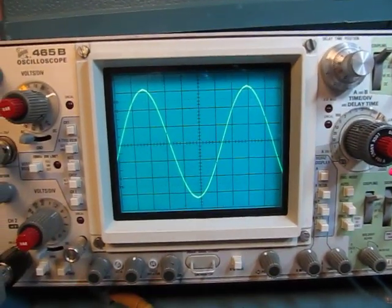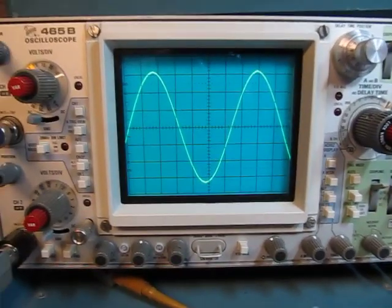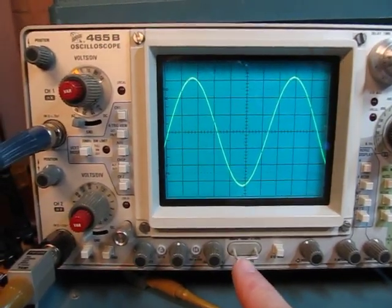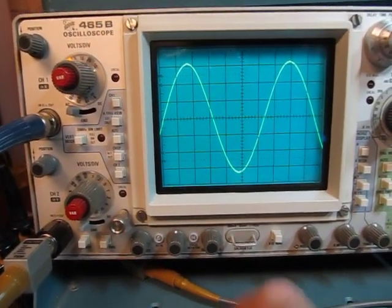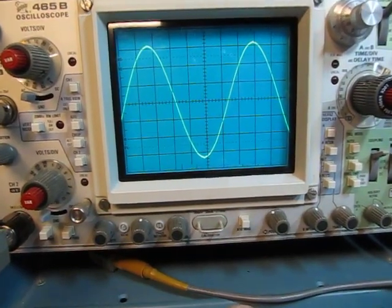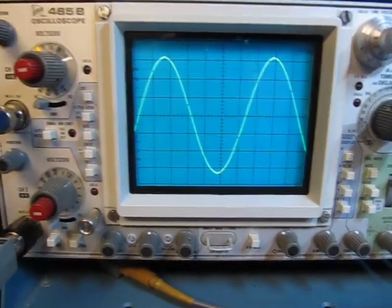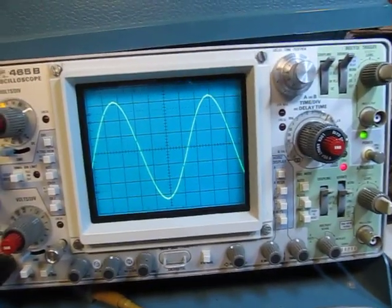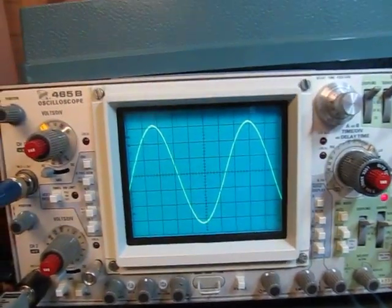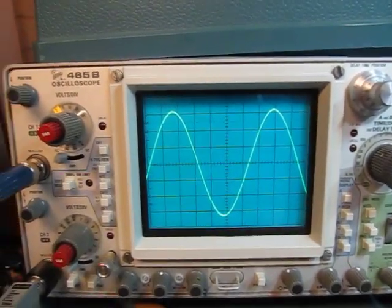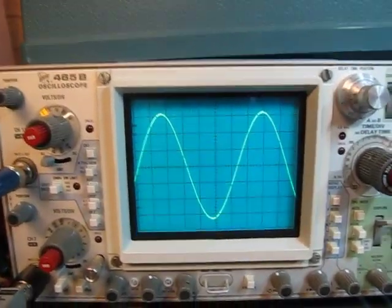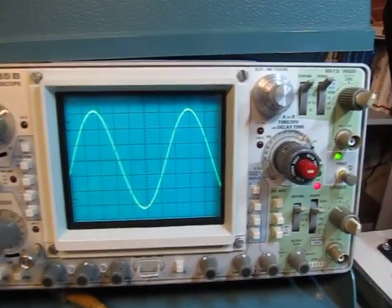I'll comment that any accuracy measurement is going to be based a lot on what the time base accuracy is on the analog scope, which typically might be a percent or two or less, depending on the scope. And this scope hasn't been calibrated in probably 10 years. But I'll show you the process of how you go through that. It's actually pretty neat.